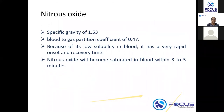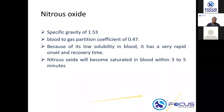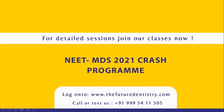Certain properties of nitrous oxide are commonly asked in exams. The specific gravity of nitrous oxide is 1.53. The blood-to-gas partition coefficient is 0.47, and it will be saturated in blood within three to five minutes. These are properties of nitrous oxide gas that you need to know.